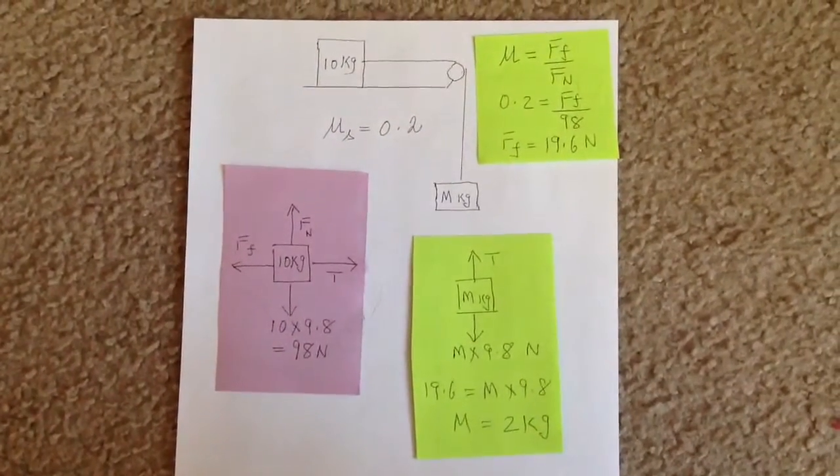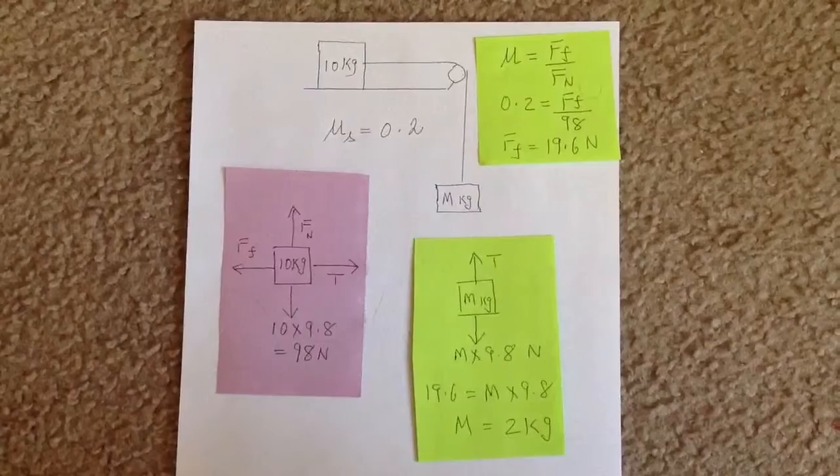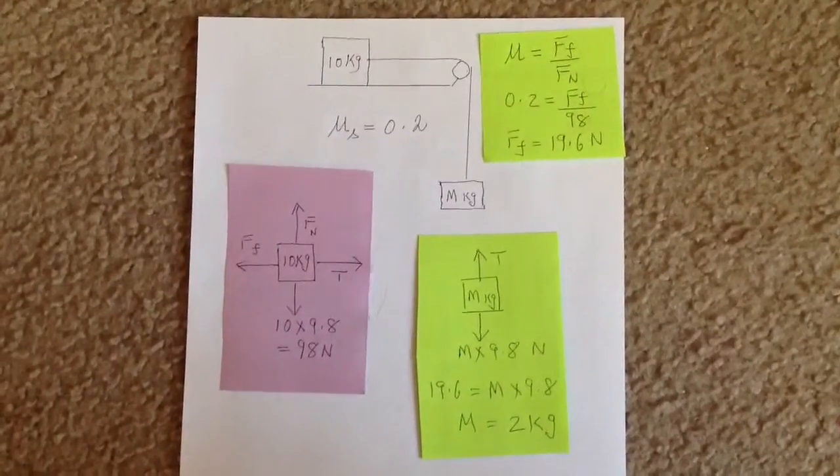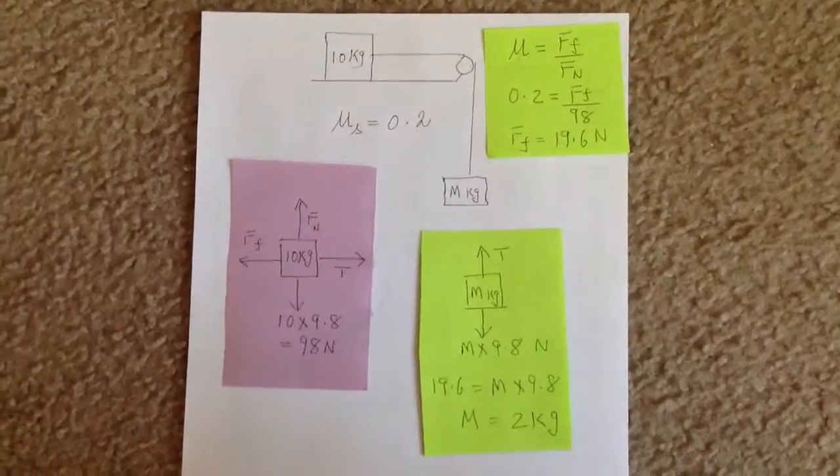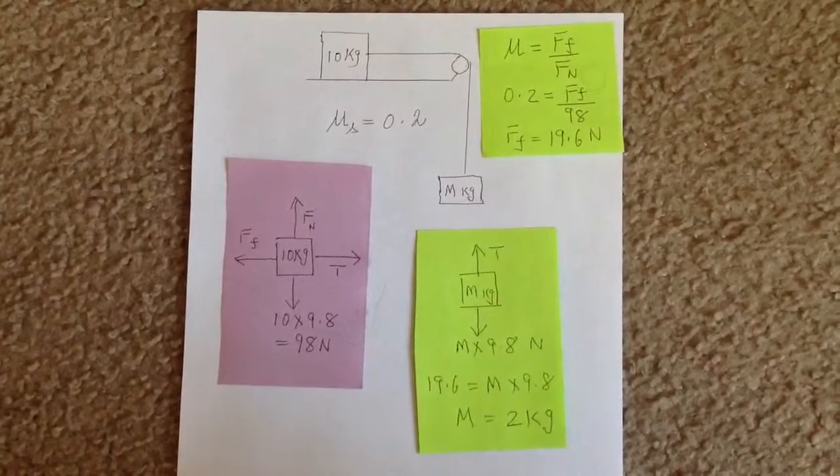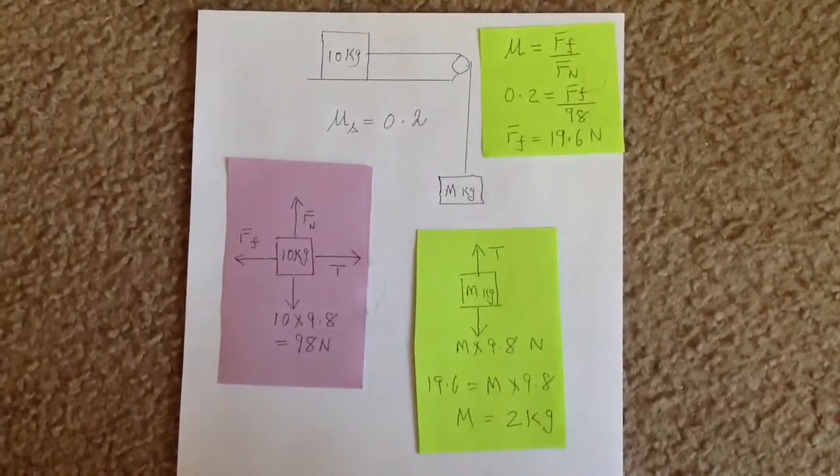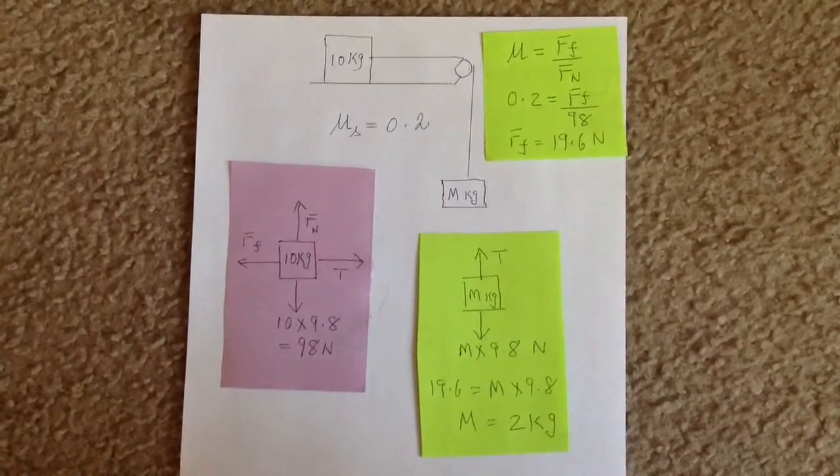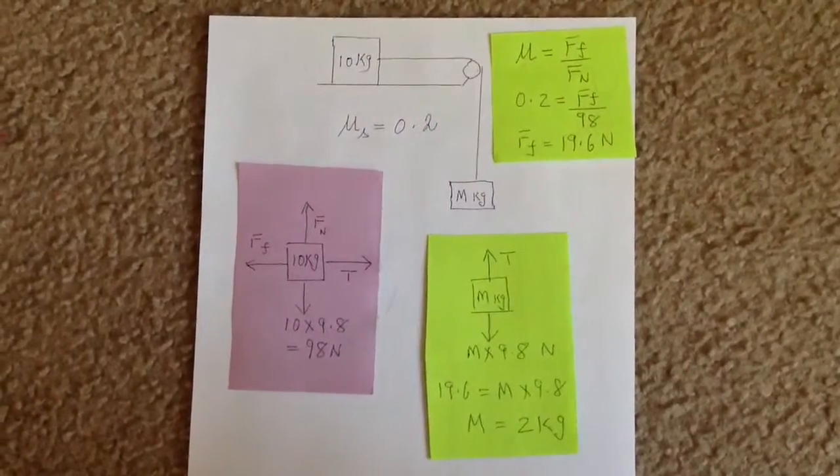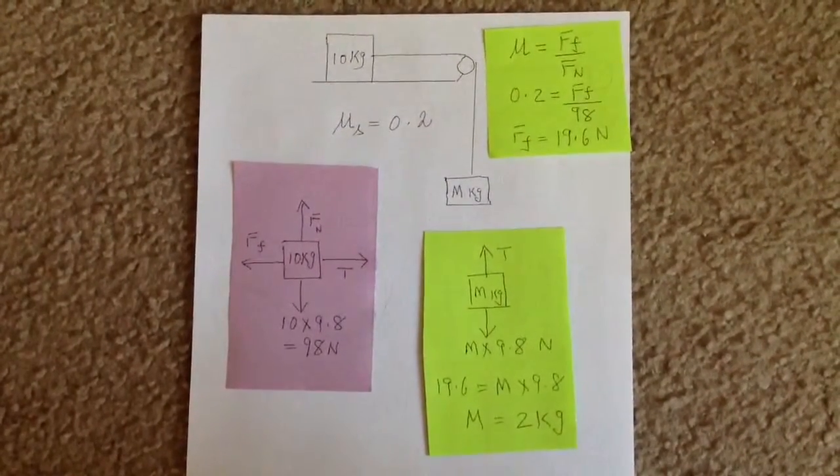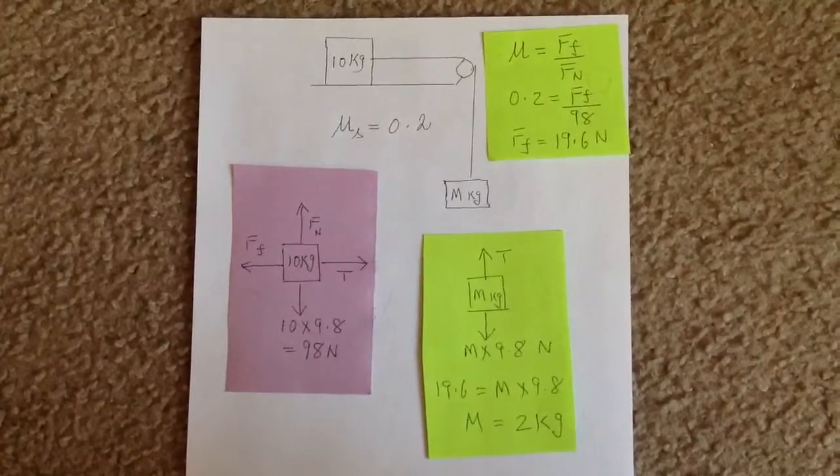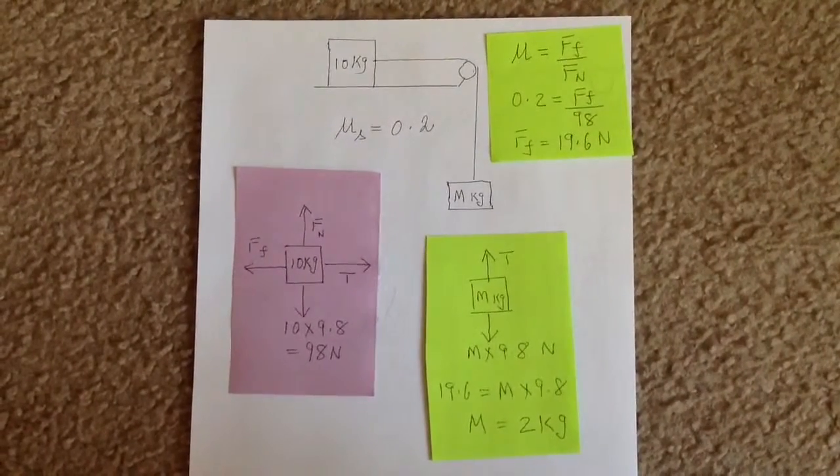We already know the tension is 19.6 newtons. So, 19.6 equals m times 9.8, or m equals 2 kg. So, for the system to be in equilibrium, the maximum value of m is 2 kg.